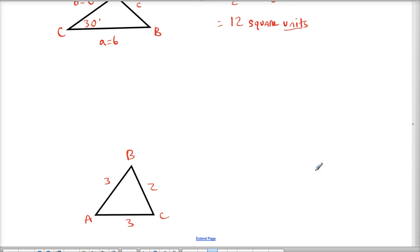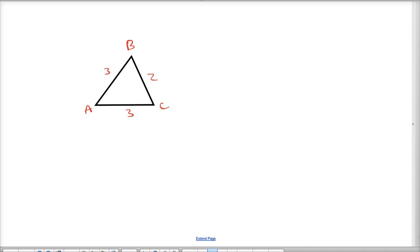Let's do an example where we're going to use Heron's formula. So in this case we have our three different side lengths. This here would be side c because it's opposite of angle c. This is a and this is side b.